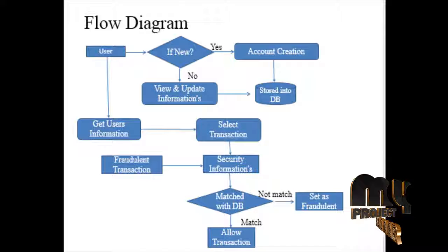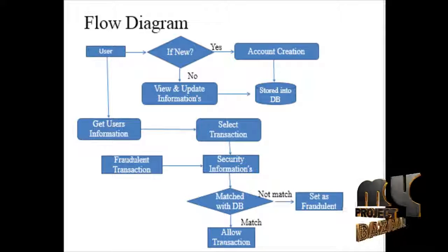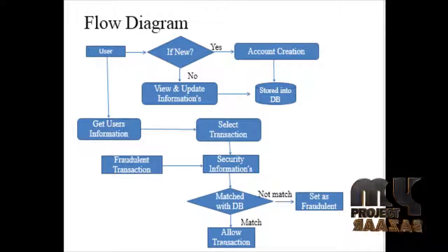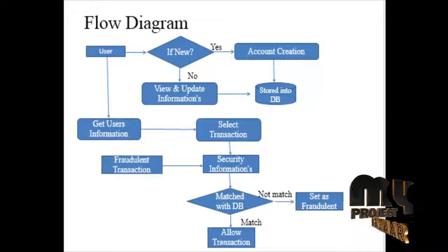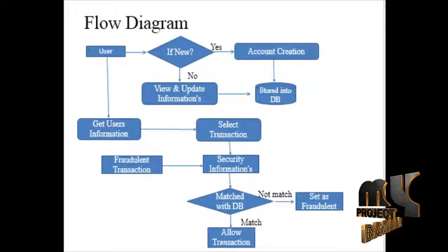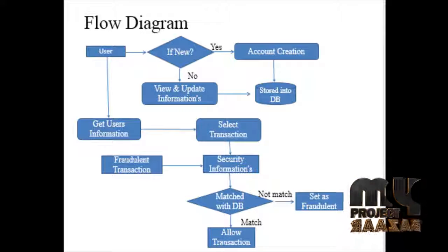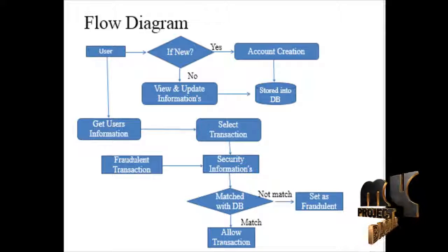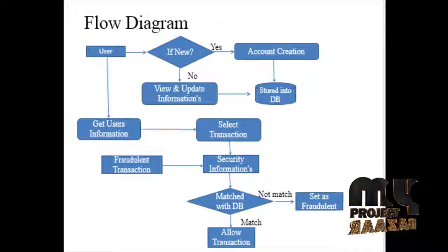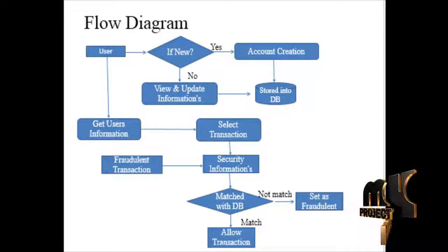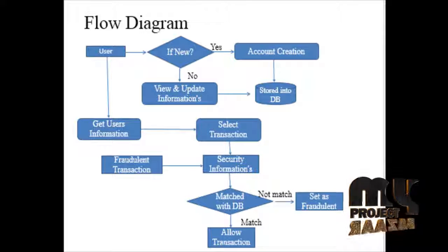Next we are going to see the flow diagram. Initially the user needs to create an account. If he is a new user, he needs to create an account using registration information — username, password, and his details. The data will be stored in a database. If he is an existing user, he can login into the account, use the shopping site, view the products, and add them to cart.